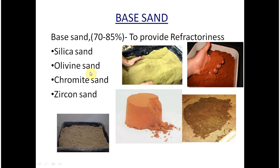Olivine sand is a mixture of orthosilicates of iron and magnesium from the mineral dunite. Its main advantage is that it is free from silica; therefore it can be used with basic metals such as magnet steel. Additional advantages include low thermal expansion, high thermal conductivity, and a high fusion point.